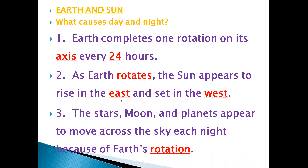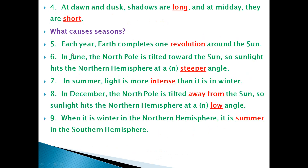Number next: The stars, moon, and planets appear to move across the sky each night because of earth's rotation. The blank answer is 'rotation'. Number next: At dawn and dusk shadows are long, and at midday they are short.